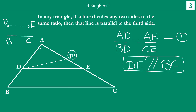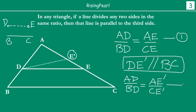Now, recall from our last theorem: if we look at triangle ABC and DE' is parallel to BC, then AD divided by BD must be equal to AE' divided by CE'. This is because DE' divides AB and AC in the same ratio, as we learnt in our last webisode. So AD by BD must equal AE' by CE'. Let's call this equation 2.